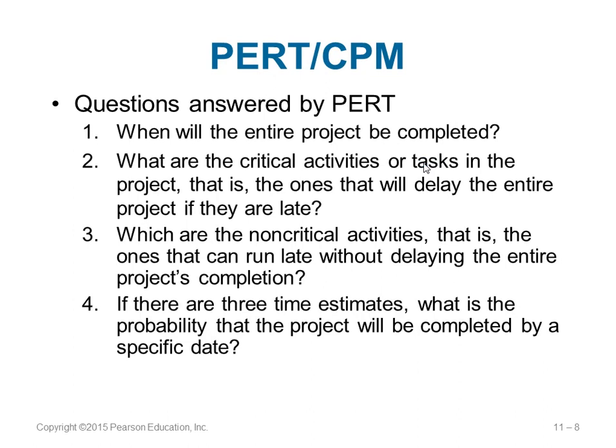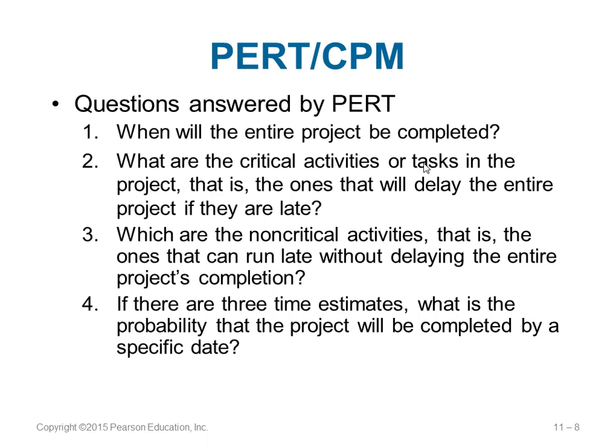PERT can answer: when will the project be completed? What are the critical activities — those whose delay will cause the entire project to be delayed? What are the non-critical activities, where some delay may not impact overall completion? Given three estimates, how do you calculate the probability of completing a specific activity? You can also determine whether you are behind, ahead of, or on schedule, and find out how much of the budget has been spent.